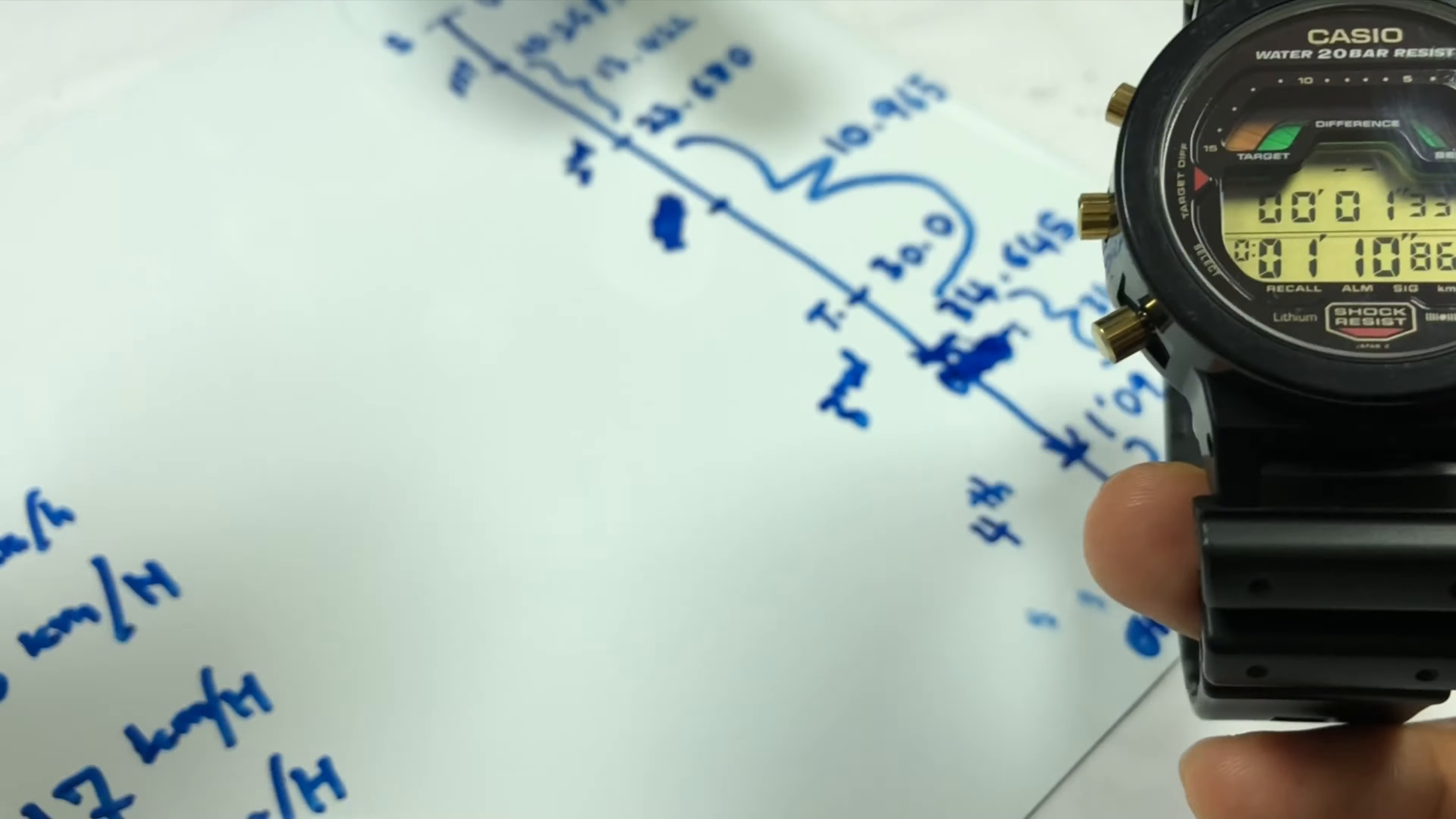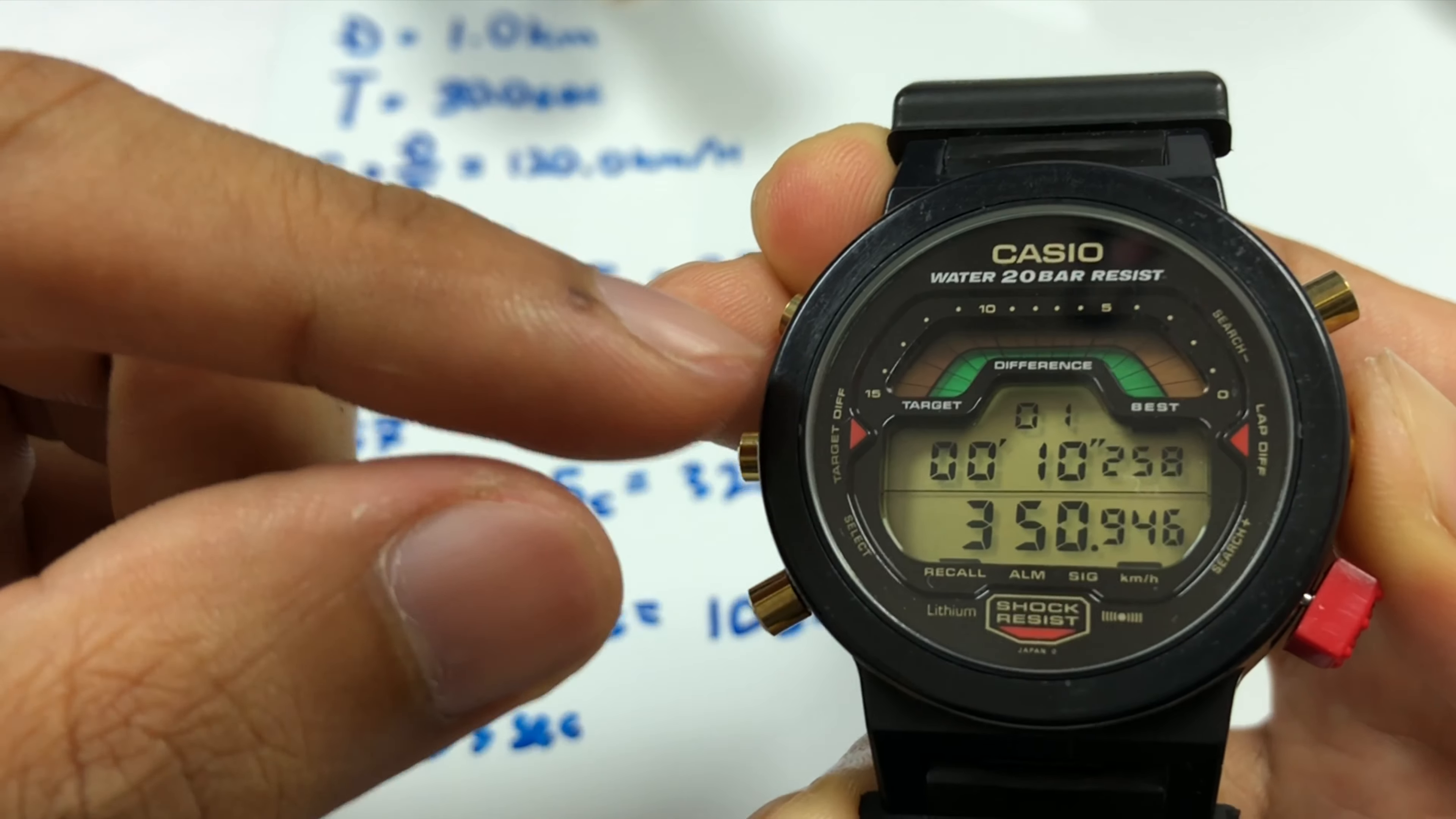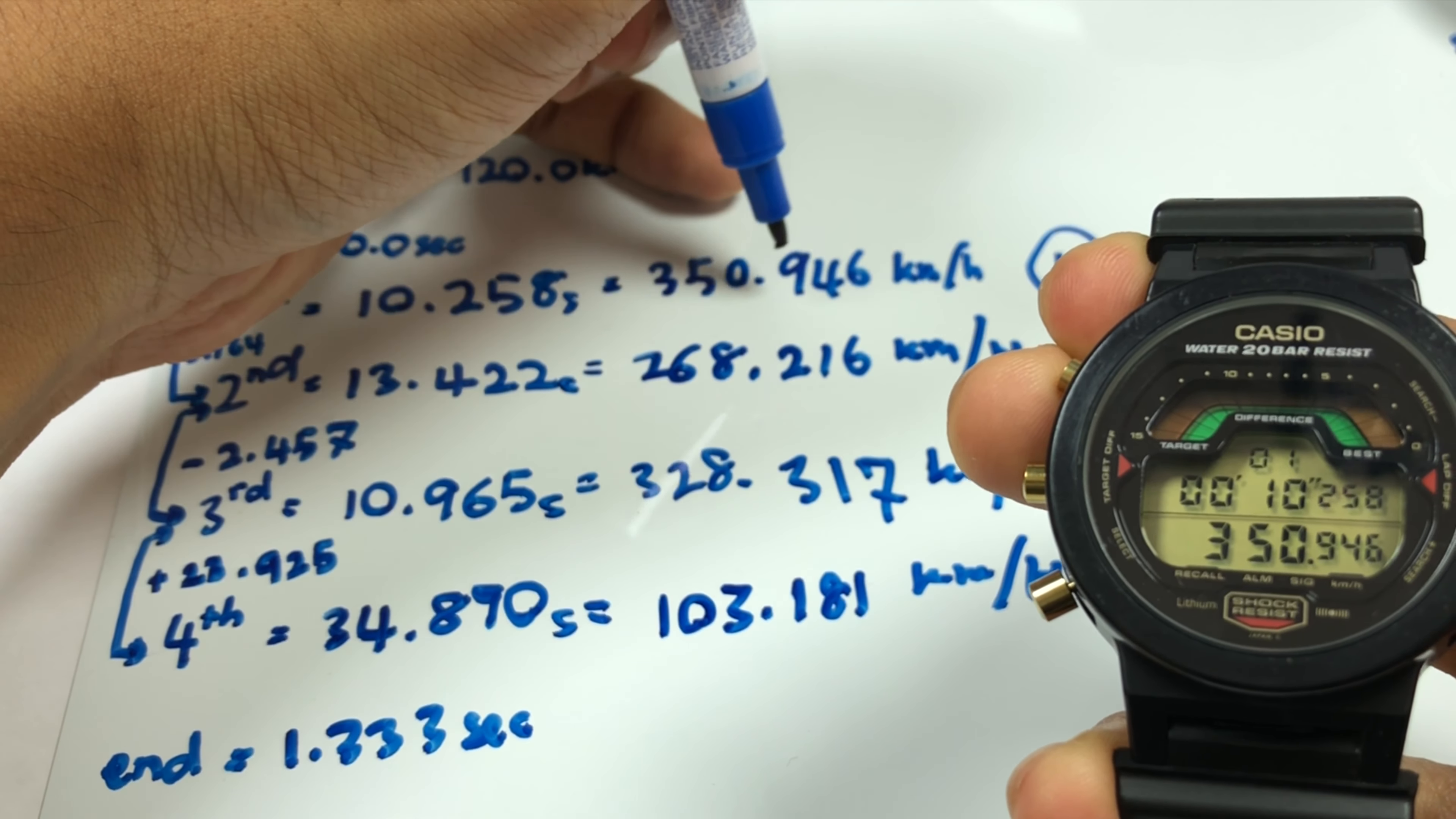What this watch will do now is show you all this data. The time, and if you press this button it will show you the best time. Out of all four recorded times, the best will be 10.258, which is the first data. The first one is the fastest out of all four, with a speed of 350.946 kilometers per hour.